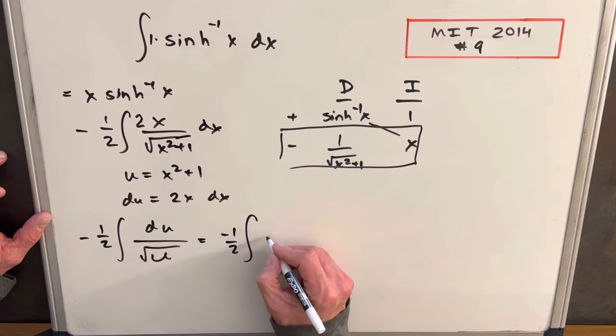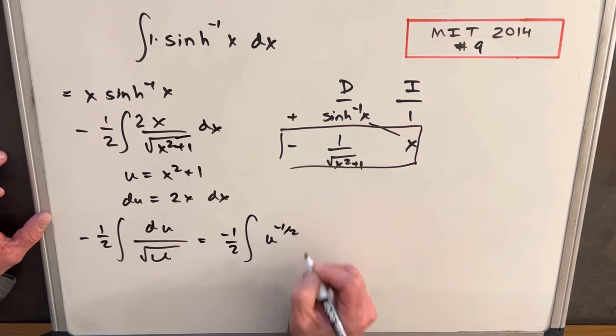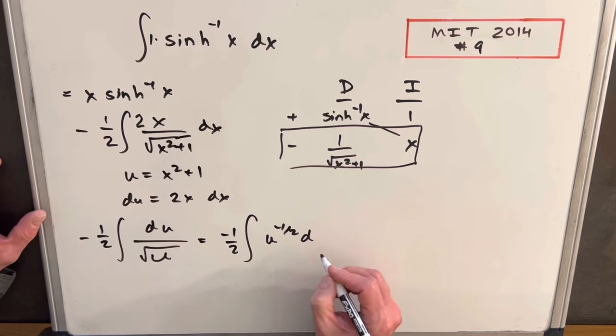We're going to have minus one half. I'm going to write it as a power so we can use the power rule easily. U to the minus one half du.